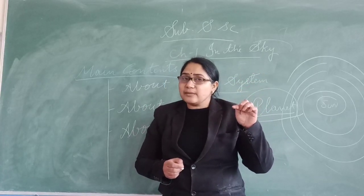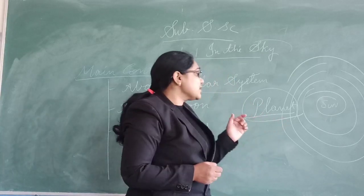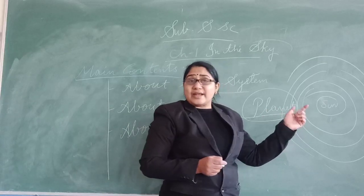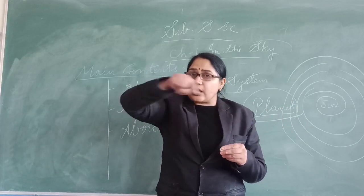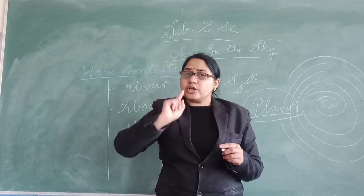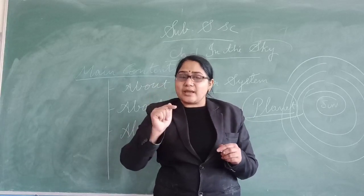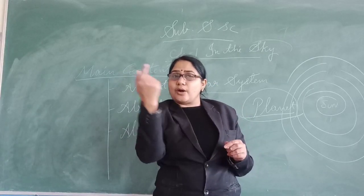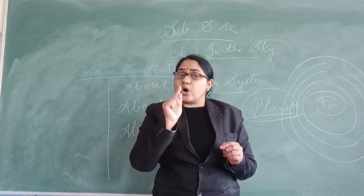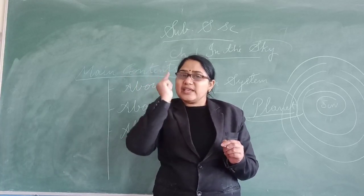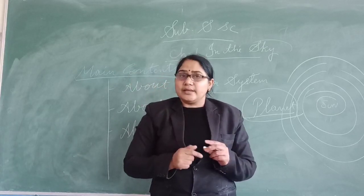What is an orbit line? An orbit is an imaginary line where a planet revolves around the sun. Each planet has its own orbit line, and each planet revolves around the sun on its orbit line.